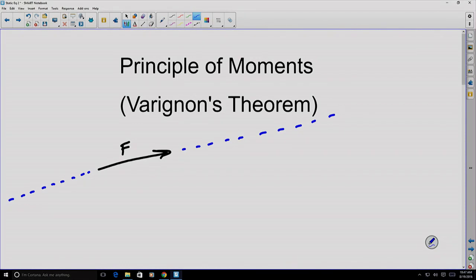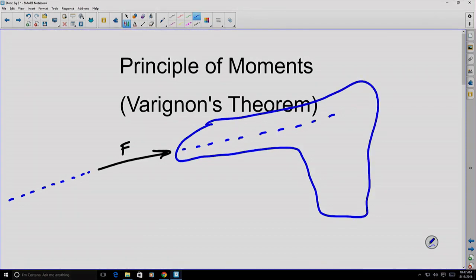For example, let's say I have some sort of widget, some random shape, but any point inside that shape, we can actually exert a moment on, a tendency to make this widget, this piece, spin about that point.